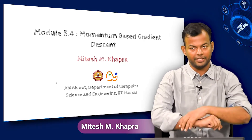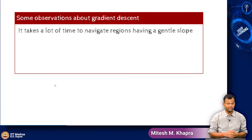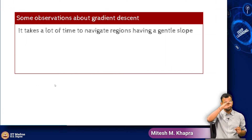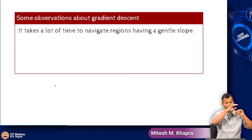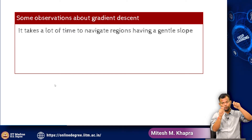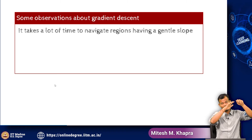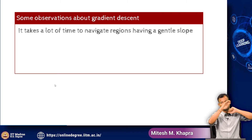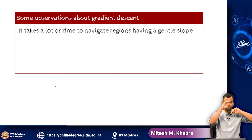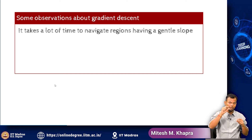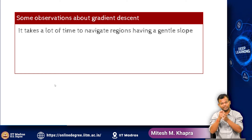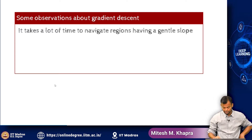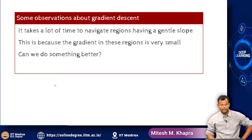Now we are ready to talk about momentum-based gradient descent and see whether it fixes the problem. Our observation about gradient descent is that it takes a lot of time to navigate regions having a gentle slope. Wherever we have a gentle slope, the distance between successive contour rings is very large. In those gentle slope regions it takes a long time because the gradients are small and if the gradients are small, your updates are small.